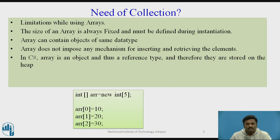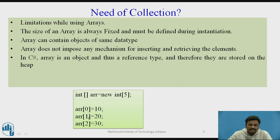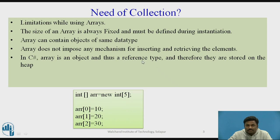This is a simple example of arrays — how we declare an array and how we store values. We write 'int array = new array'. Here, the array is created dynamically as an object. If I want to store 10, 12, 15, and other values, they are stored starting from index zero, then index one, index two, and so on. Arrays work as objects, so we have a reference type stored for that particular array.